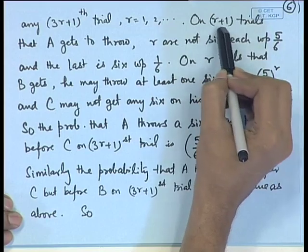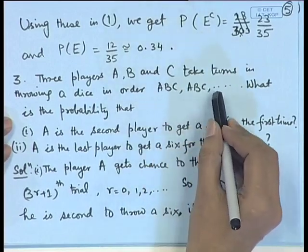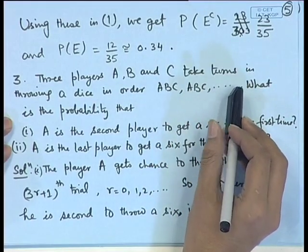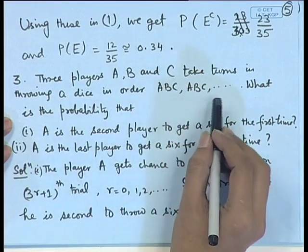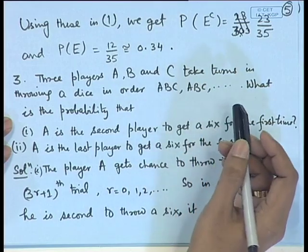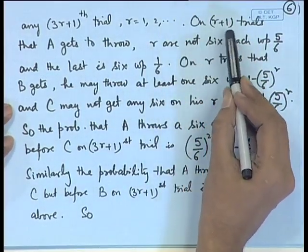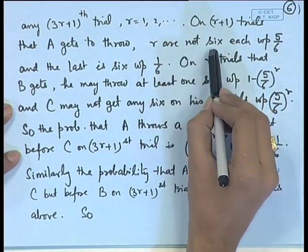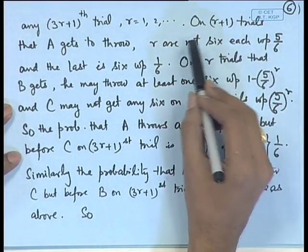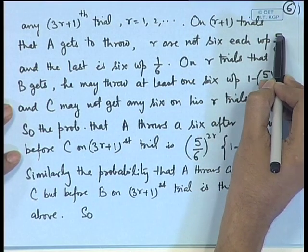For a given R ≥ 1: player A gets R+1 chances, meaning before the (3R+1)th trial, each of A, B, and C takes R turns. Player A must not get a 6 in his first R trials. Assuming a fair die, the probability of not throwing a 6 in a single trial is 5/6.